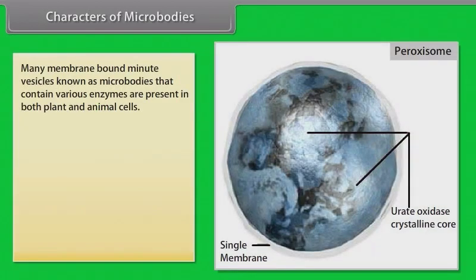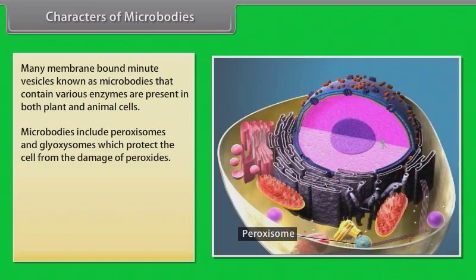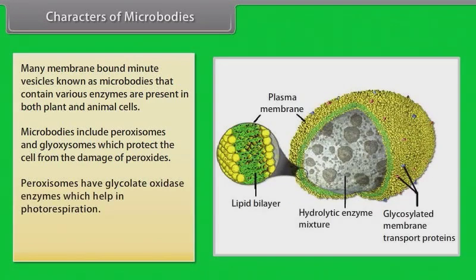Characters of microbodies: Many membrane-bound minute vesicles known as microbodies that contain various enzymes are present in both plant and animal cells. Microbodies include peroxisomes and glyoxysomes, which protect the cell from the damage of peroxides. Peroxisomes have glycolate oxidase enzyme, which helps in photorespiration. Spherosomes synthesize and store fat.